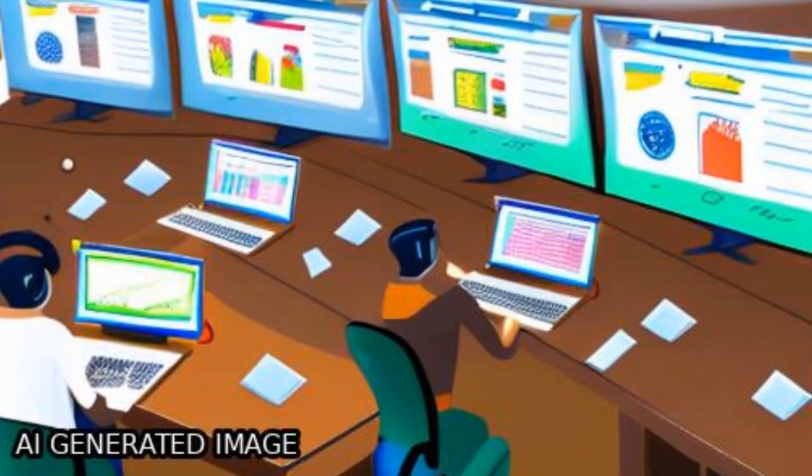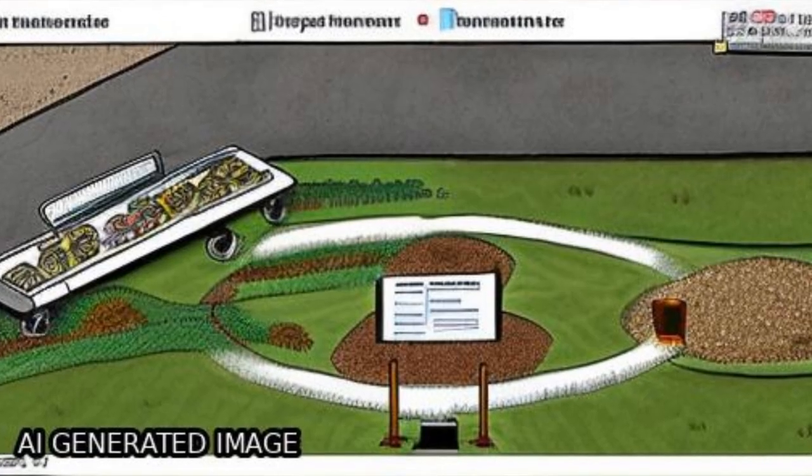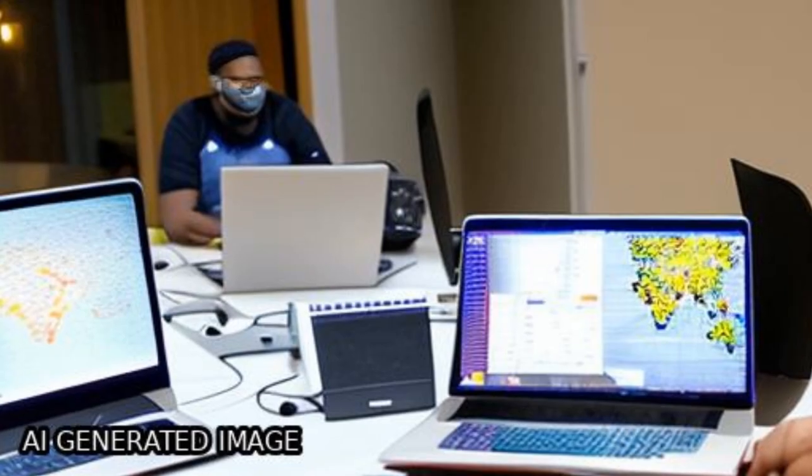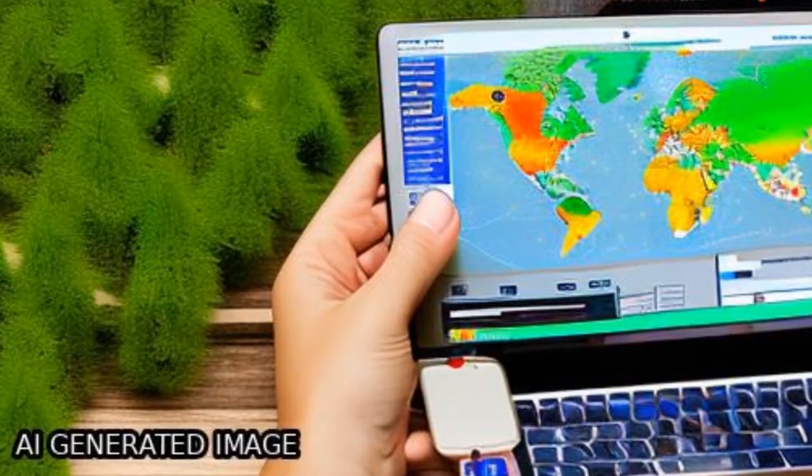The International Soil Moisture Network, ISMN, was established to serve as a centralized data hosting facility for globally available in-situ soil moisture measurements from operational networks and validation campaigns.